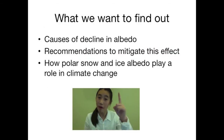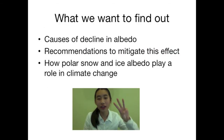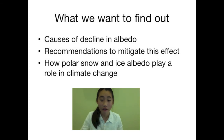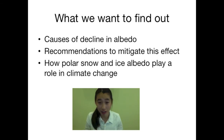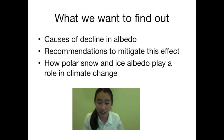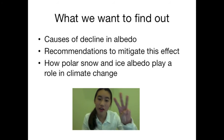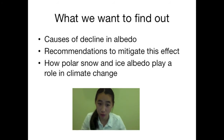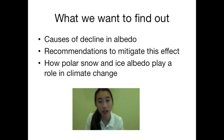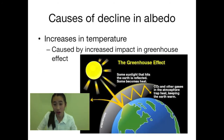There are three things we want to find out: first, causes of decline in albedo; second, recommendations to lessen this effect; and third, how does polar snow and ice albedo play a role in climate change? Let's start off with causes of decline in albedo.